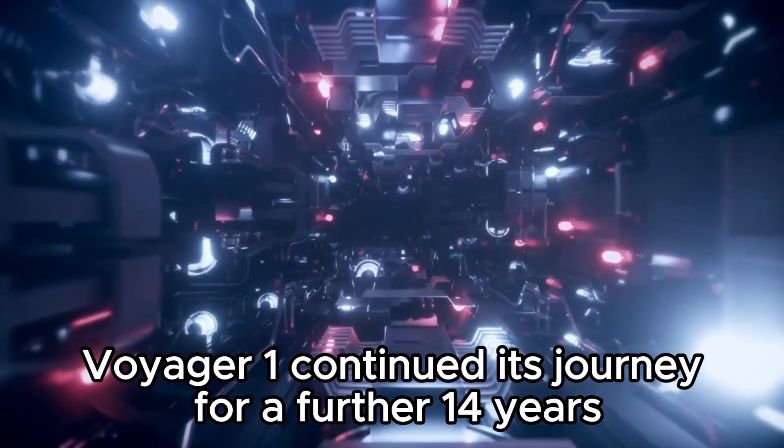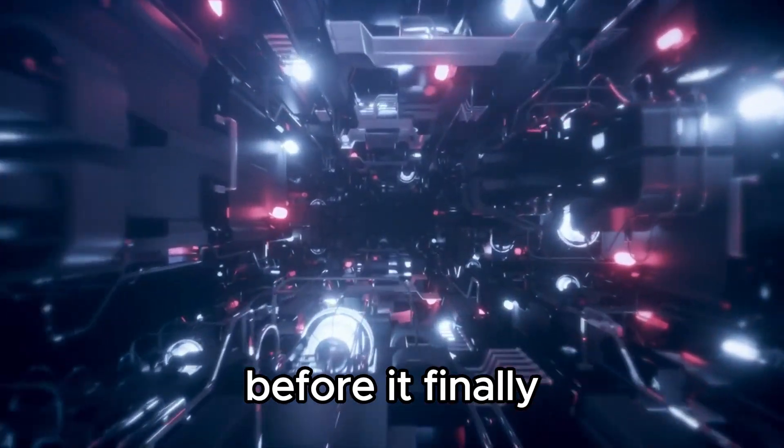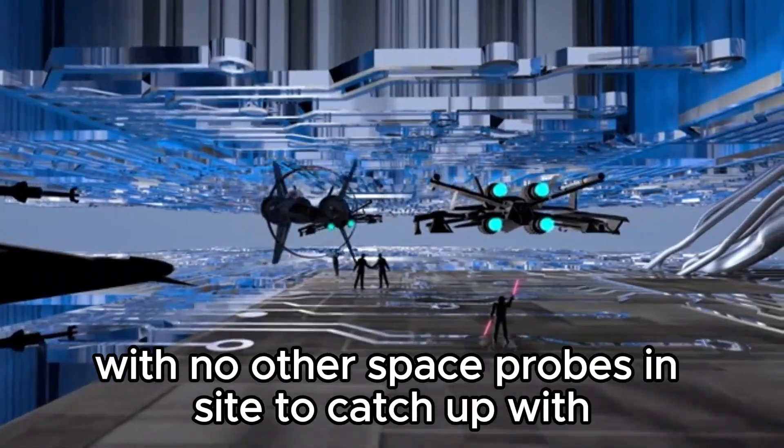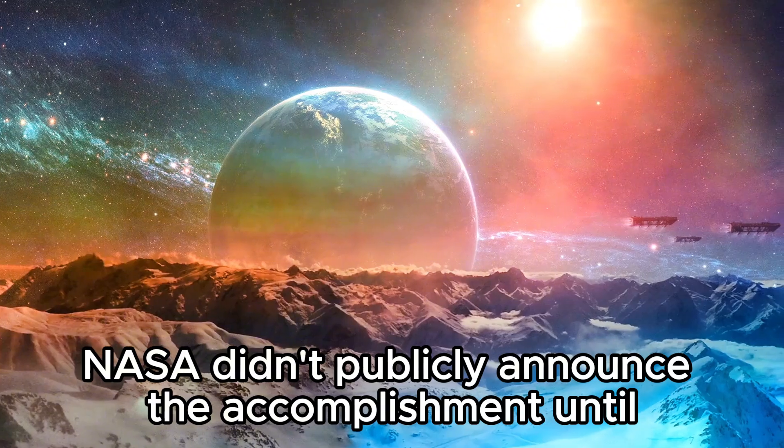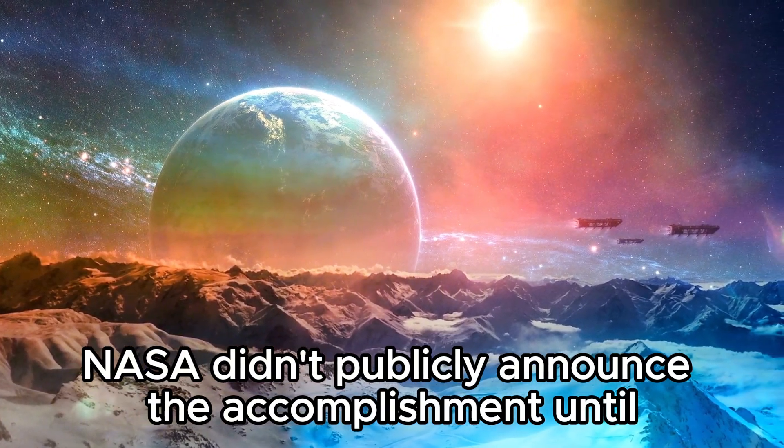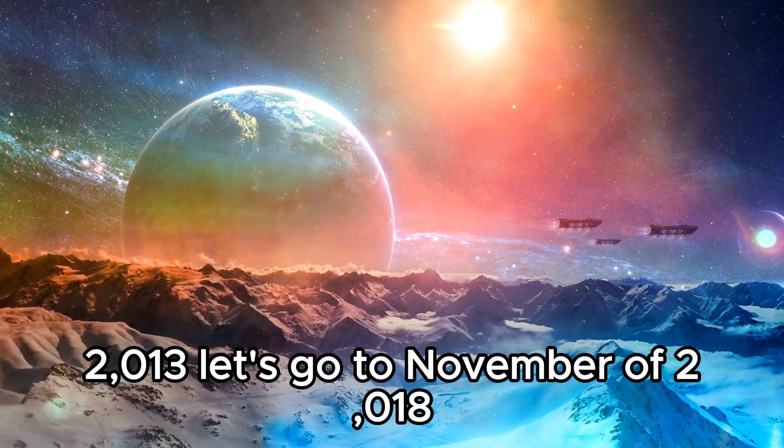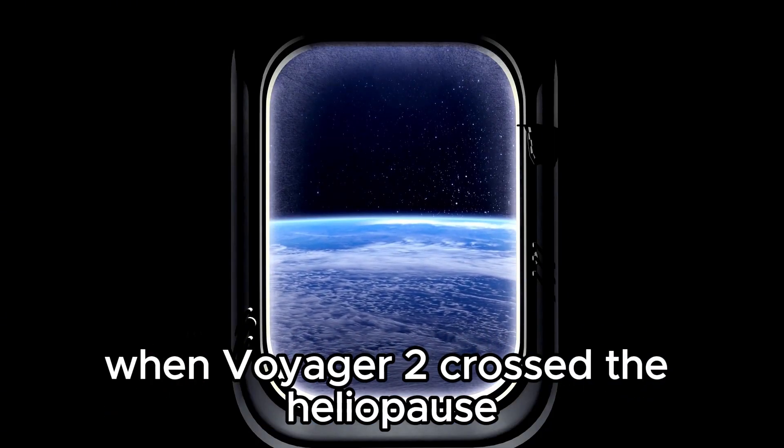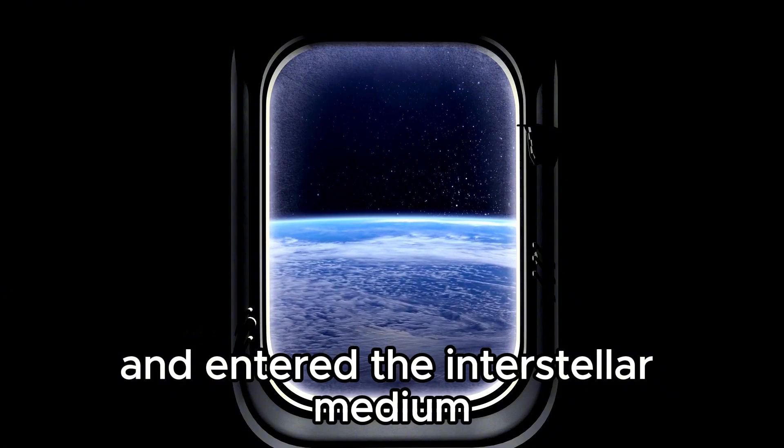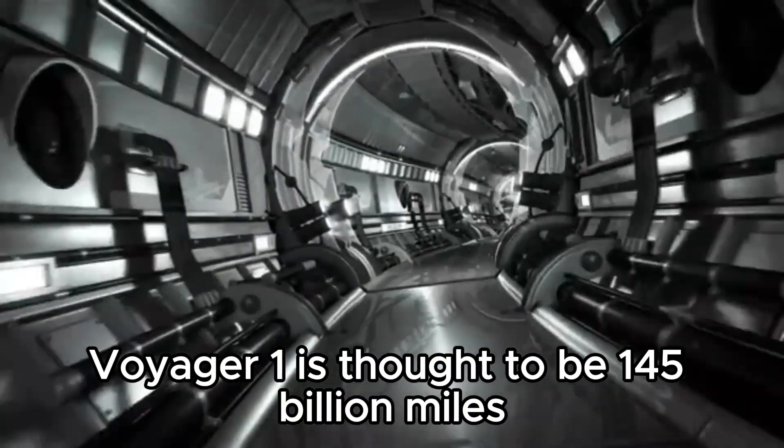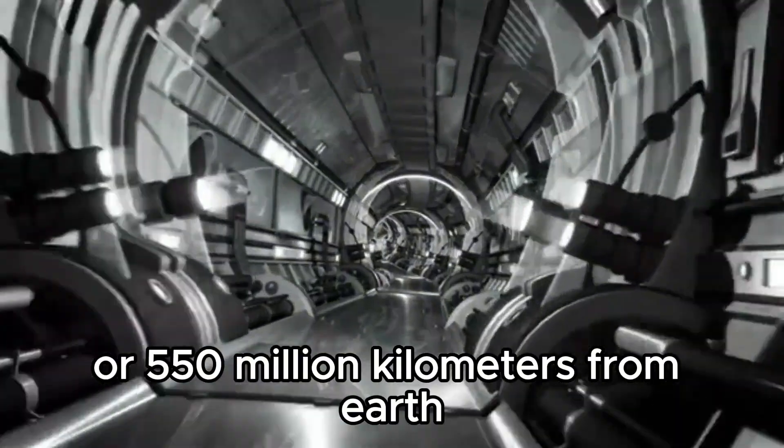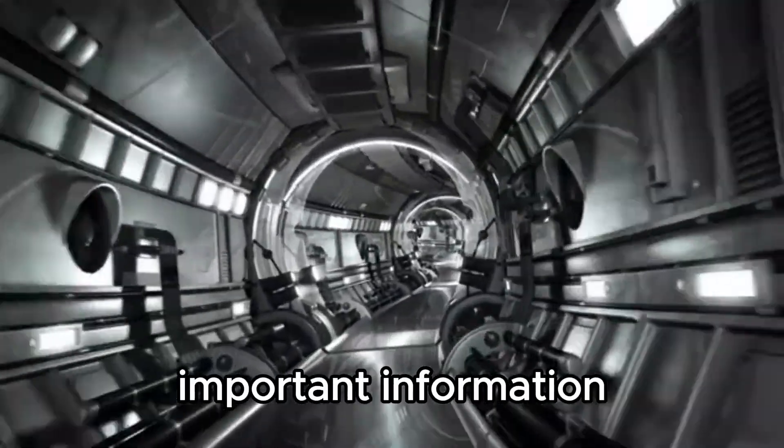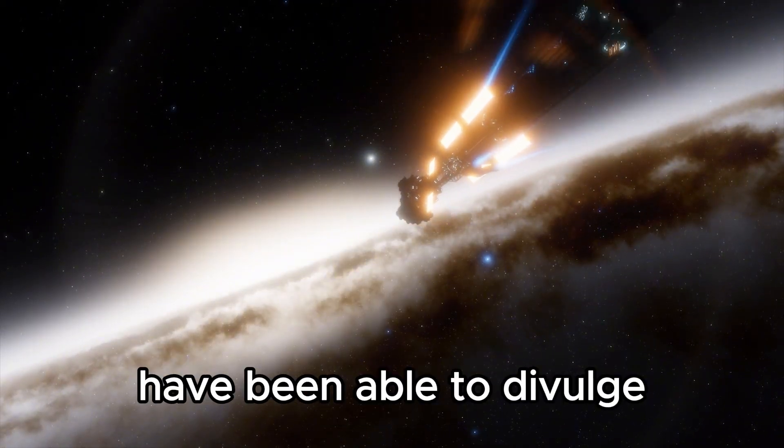Voyager 1 continued its journey for a further 14 years before it finally arrived in the interstellar environment on August 25th, 2012, with no other space probes in sight to catch up with. But NASA didn't publicly announce the accomplishment until 2013. Let's go to November of 2018. Both space probes have officially left the solar system when Voyager 2 crossed the heliopause and entered the interstellar medium. Voyager 1 is thought to be 145 billion miles, or 550 million kilometers, from Earth. It has continued to provide us with important information that no other space probe missions have been able to divulge.